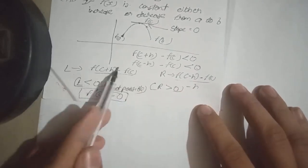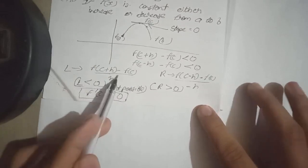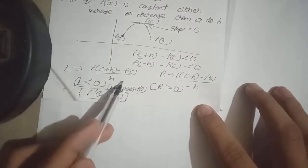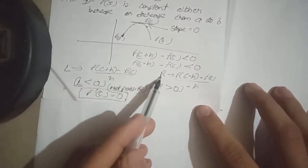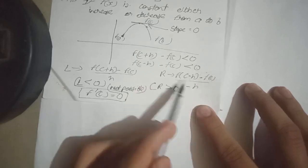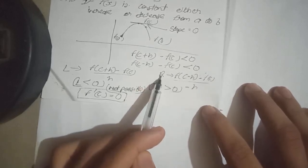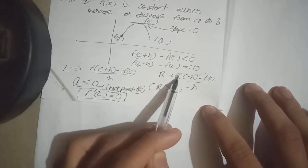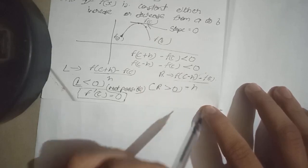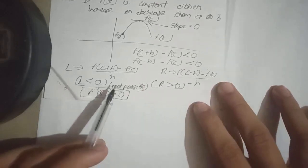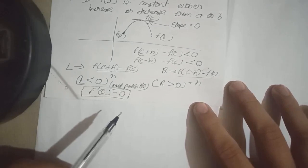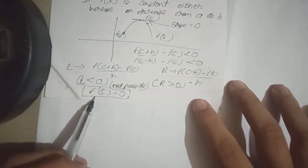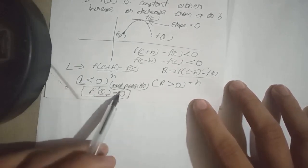So we know that this quantity is negative, so left hand limit is negative. We know that this quantity is again negative, therefore right hand limit is positive because minus in denominator and also minus in numerator so both are cancelled. So this is not possible because the function is continuous, so f'(c) is equal to zero.